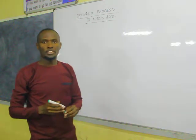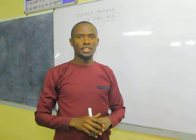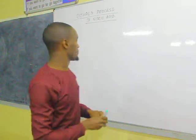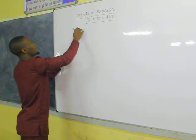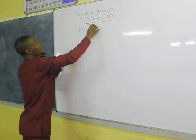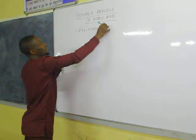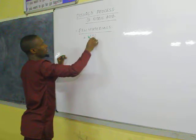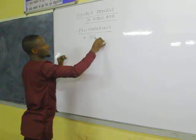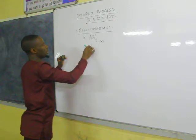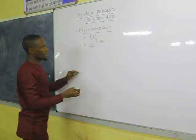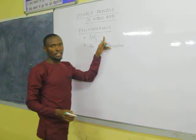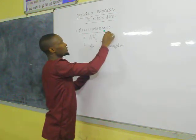In the manufacture of nitric acid, the raw materials we need for this process are ammonia gas and air. We need number one, ammonia gas, and we obtain air from the atmosphere. This ammonia we obtain from the Haber process.